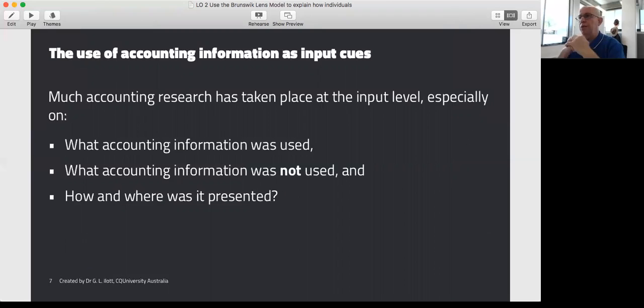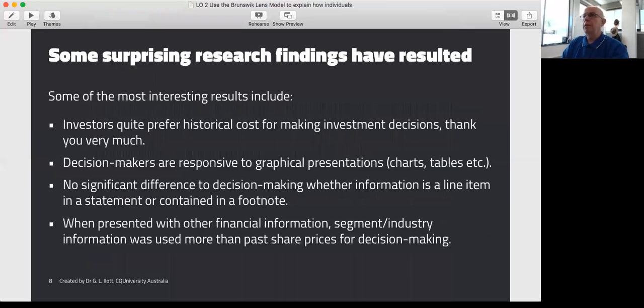The use of accounting information as input cues: we've found there's been a lot of research on what information was used, what information was not used (which is just as important), and how and where was it presented. What we've found is that actually investors quite highly rate historical cost accounting, which is quite contrary to what other people have been telling us. They quite like the fact that historical cost is historical and provable. You can almost see the receipt of how much an asset cost. While investors know there are a lot of problems with historical cost, they also know there are problems trying to verify people's judgment about value.